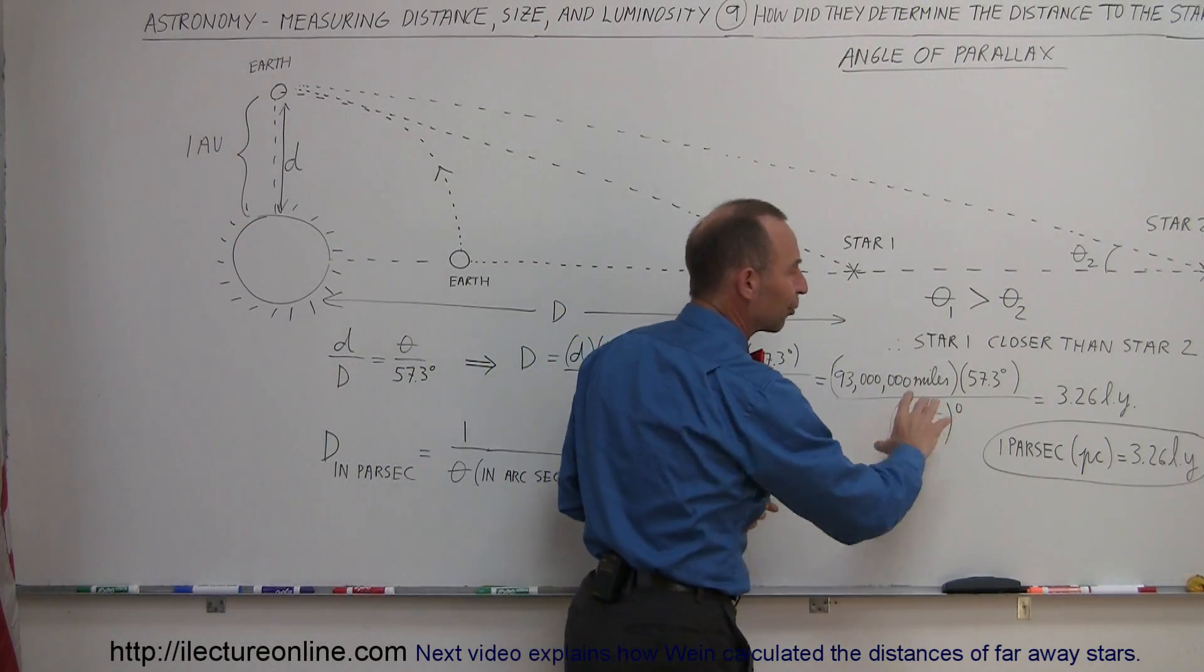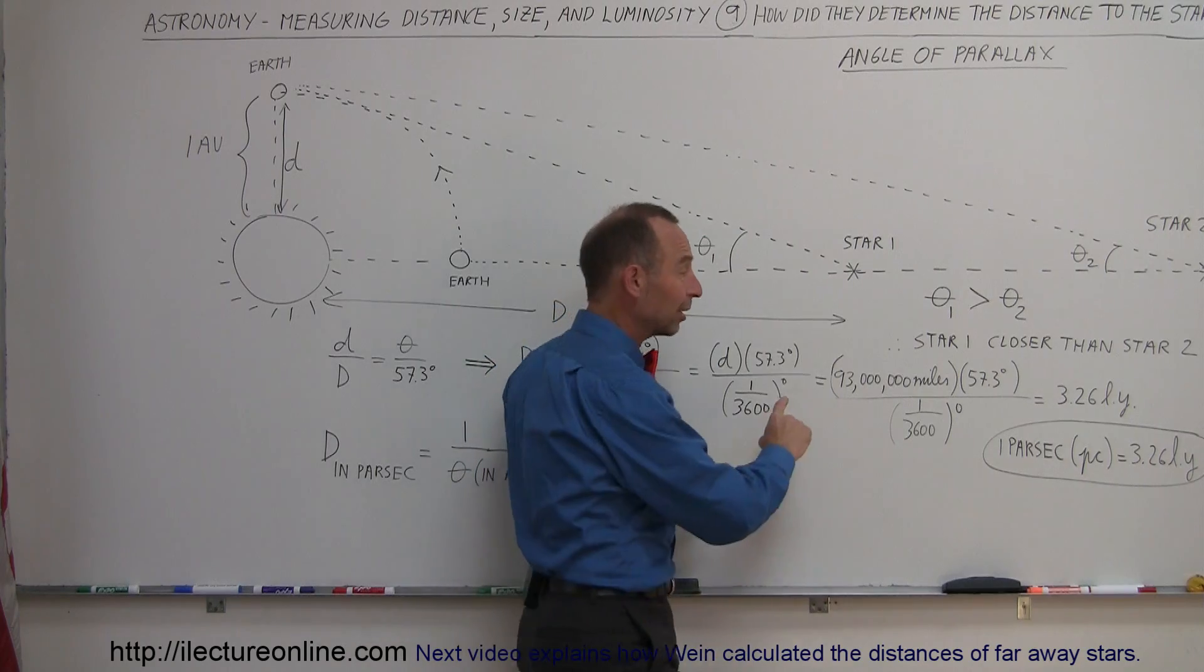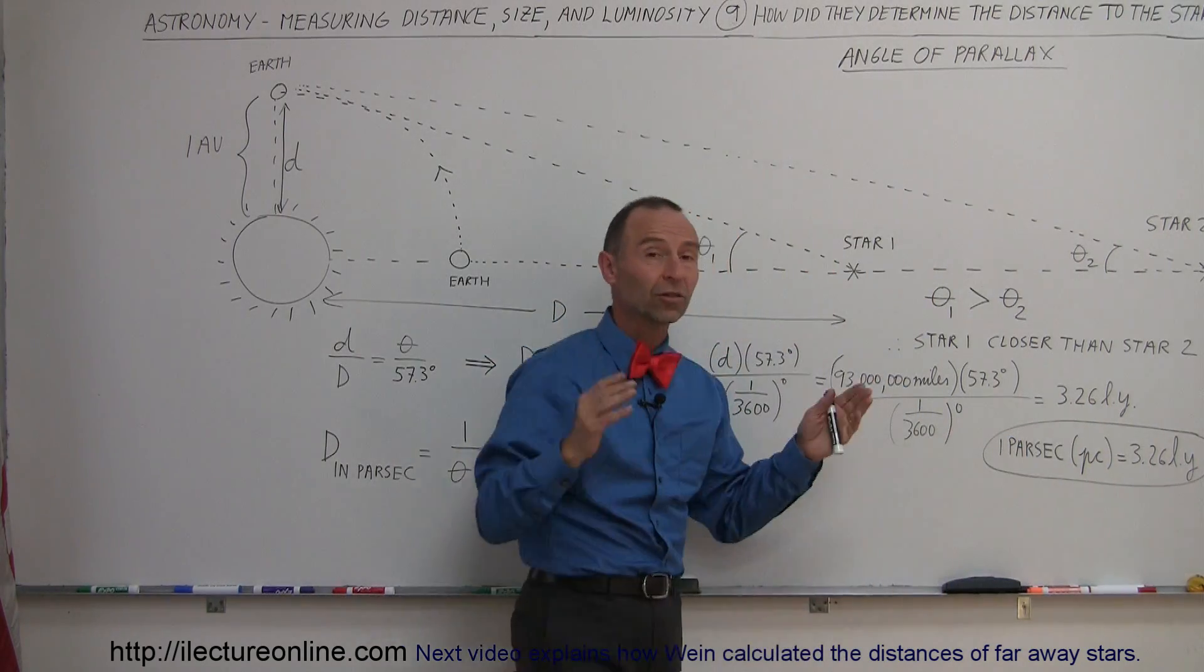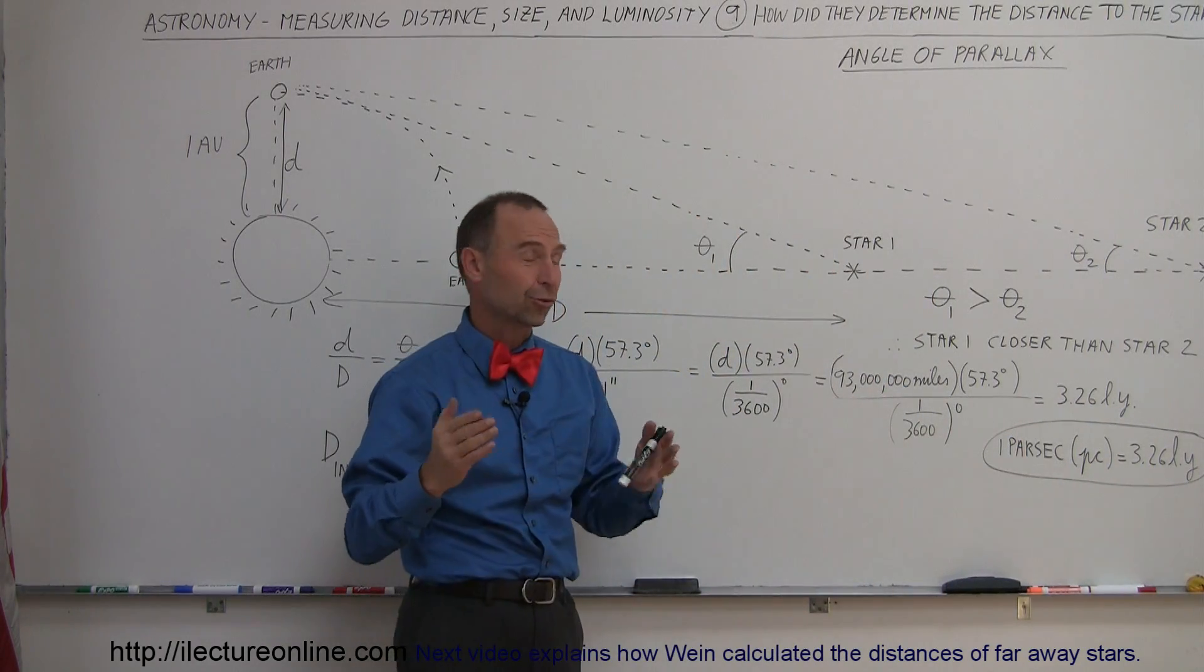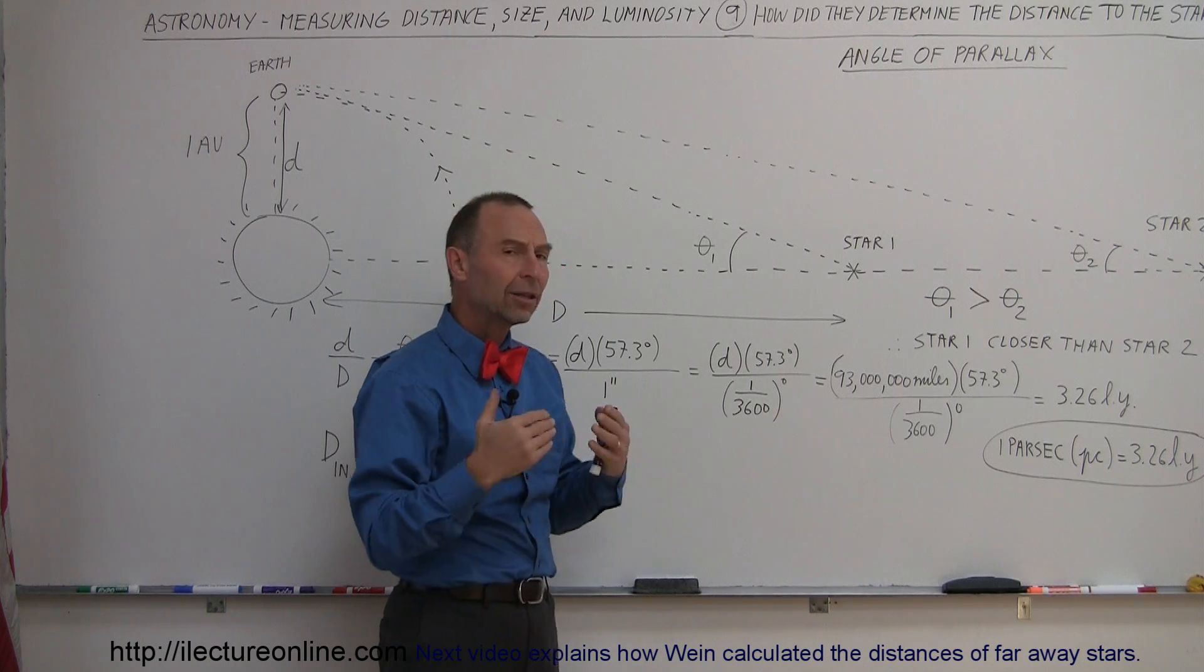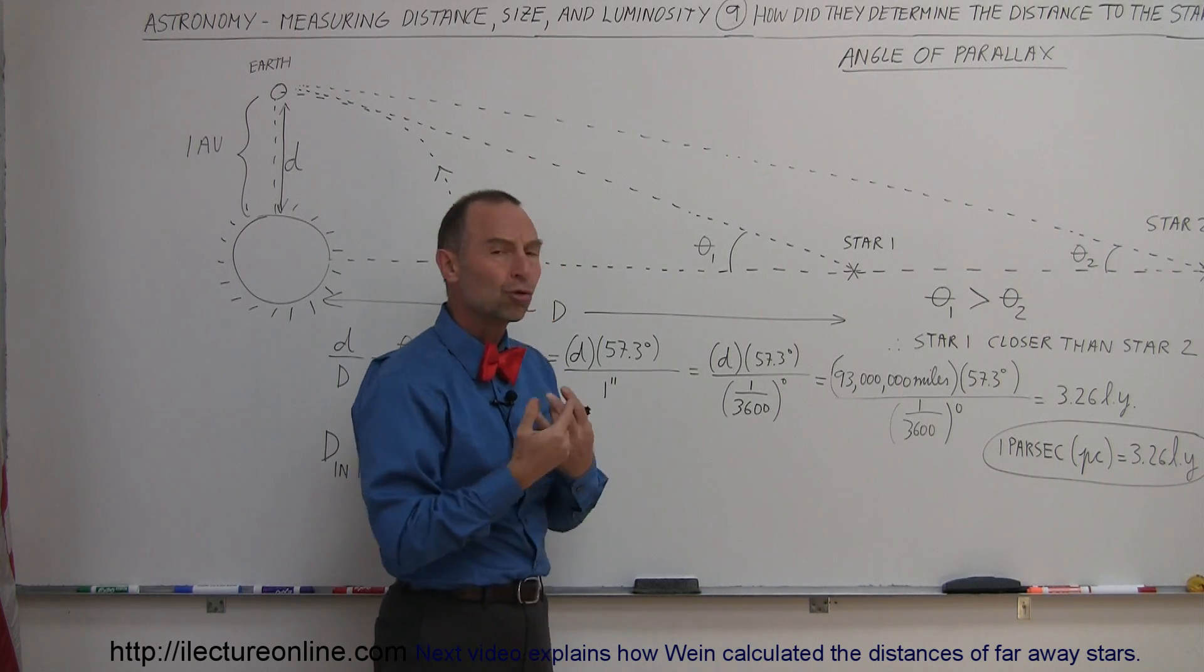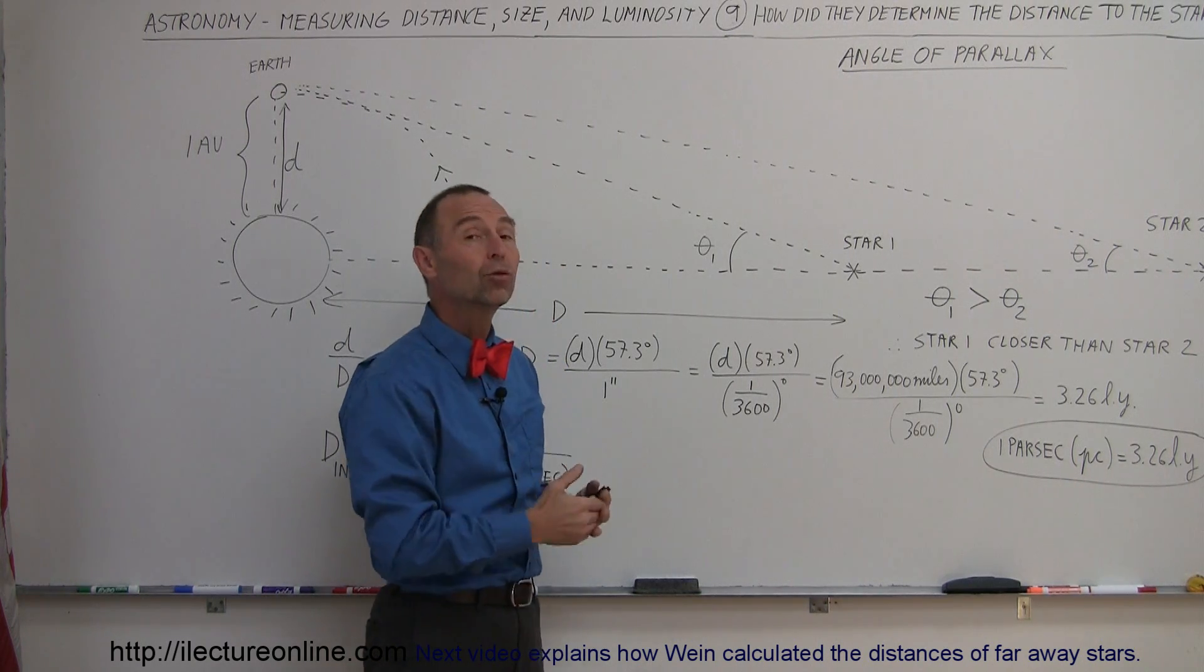and out pops, of course, if we do a little bit of a conversion, we end up with 3.26 light years, understanding that a light year is about 6 trillion miles. So it ended up being about 20 trillion miles, which is about 3.26 light years.